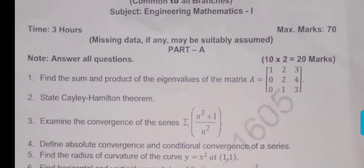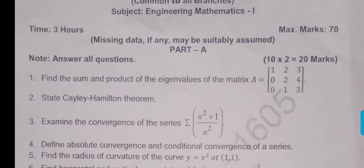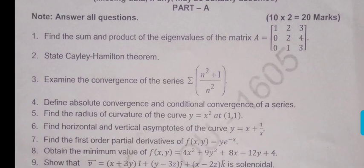See the first question, it is a matrices problem and second one, state Cayley-Hamilton theorem. Third one, sequence and series, very simple problem. He gave, we have to divide n square plus 1 by n square, separate it. 1 plus 1 by n square will come. Apply the limit, you will get 1. So not equal to 0, it is divergent.